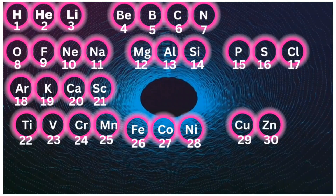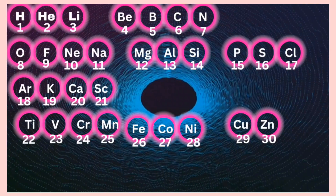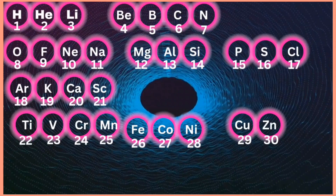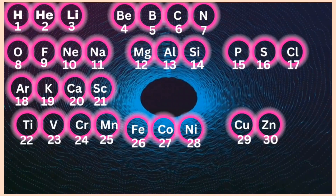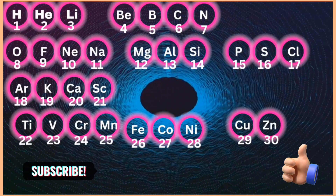There is a rhythmic song to remember all the 30 elements very easily. Let's hum it: High, Hilly, Bebo, Kane, Aphloni, Iso, Mega, Alci, Pascal, Arpa, Kaska, Tyve, Kromon, Fey, Koni, Kuzan.